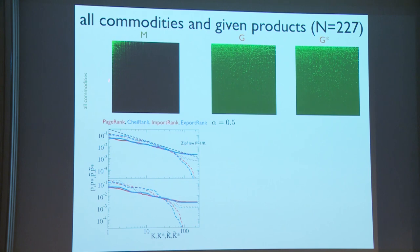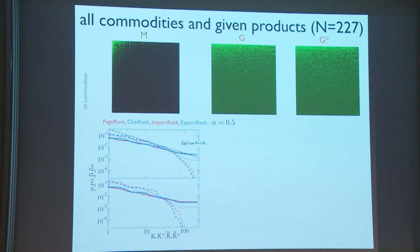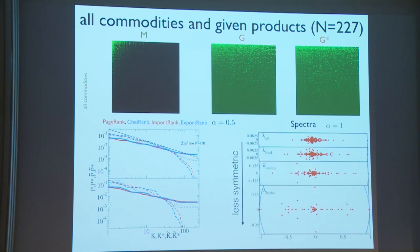The money matrix ordered by country importance shows richer countries at the top. G and G* are normalized per column, which makes the approach more democratic in countries since we give the same weight to all. We see that the distribution of PageRank follows a Zipf law, while for exports and imports it has more of an exponential tail. PageRank and CheiRank follow Zipf, while export and import rank distributions are more exponential.